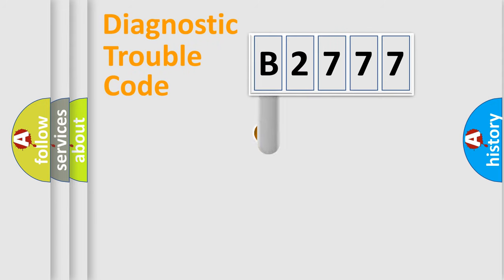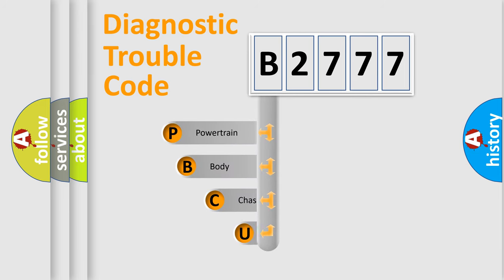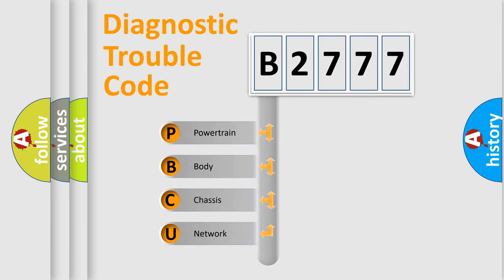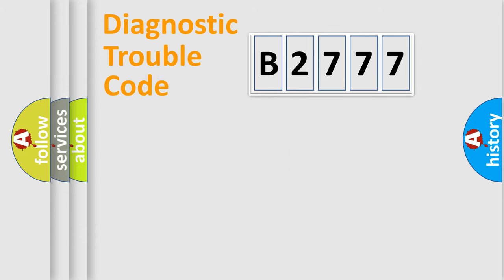Let's do this. First, let's look at the history of diagnostic fault code composition according to the OBD2 protocol, which is unified for all automakers since 2000. We divide the electric system of the automobile into four basic units: Powertrain, Body, Chassis, and Network.